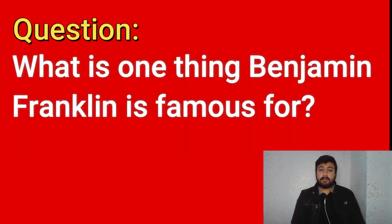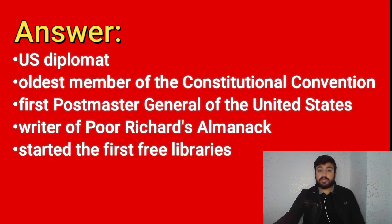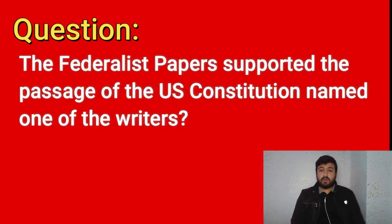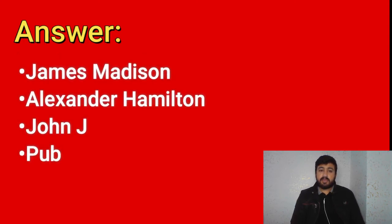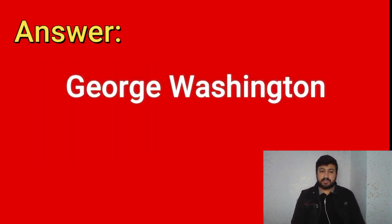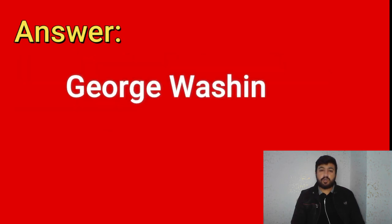What is one thing Benjamin Franklin is famous for? U.S. diplomat, oldest member of the Constitutional Convention, first Postmaster General of the United States, writer of Poor Richard's Almanac, started the first free libraries. The Federalist Papers supported the passage of the U.S. Constitution — name one of the writers: James Madison, Alexander Hamilton, John Jay. Who was the first president? George Washington. Who is the father of the country? George Washington. What territory did the United States buy from France in 1803? The Louisiana Territory.